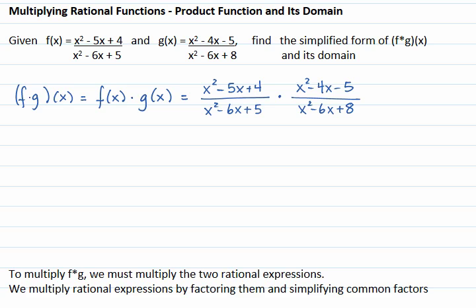To multiply two rational expressions, we factor each numerator and each denominator, and then we simplify common factors.